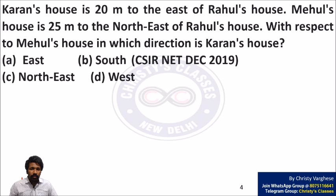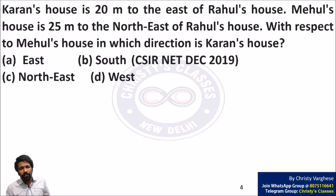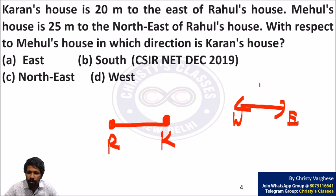This is a December 2019 CSIR net problem. Current's house is 20 meters to the east of Rahul's house. So if I represent Current's house here, Rahul's house will be to the west of it — east in the picture means this direction. With respect to Rahul's house, this 20-meter distance is given.